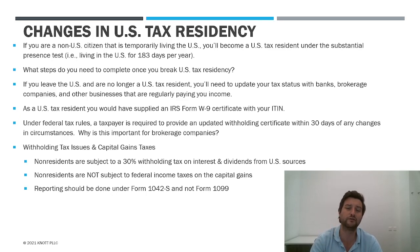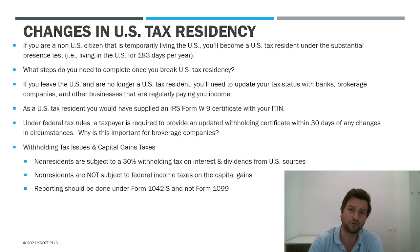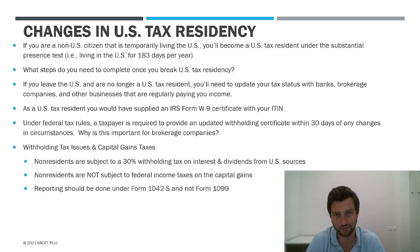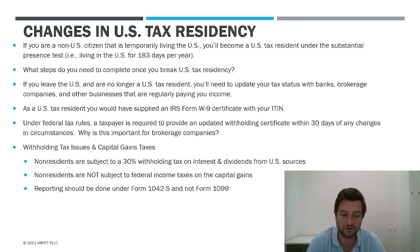When you were living there, you would have provided a Form W-9. A Form W-9 is used for U.S. tax residents. So you fill out your name, your ITIN, your address, you sign it, and that certifies to the brokerage company that you are a U.S. tax resident for federal tax purposes. If you're no longer a U.S. tax resident, you're now a non-U.S. person. And the reason why you want to make sure that these materials are updated is because that completely changes your tax profile.